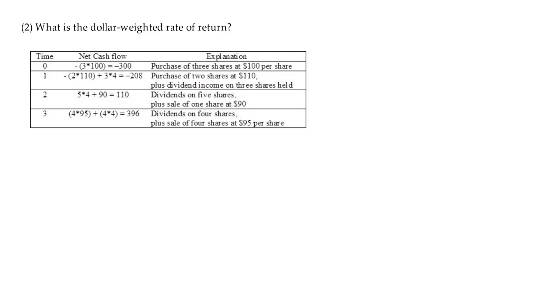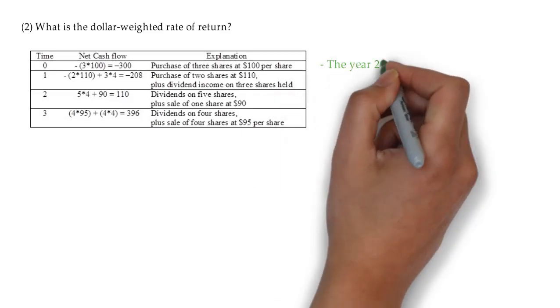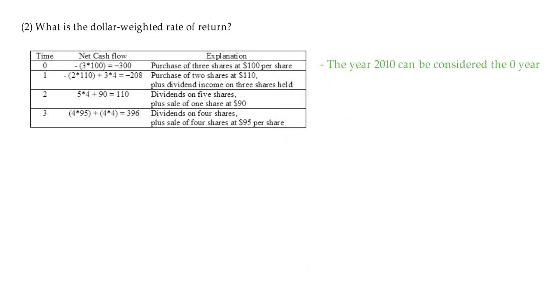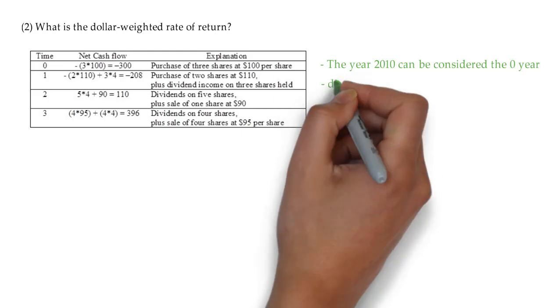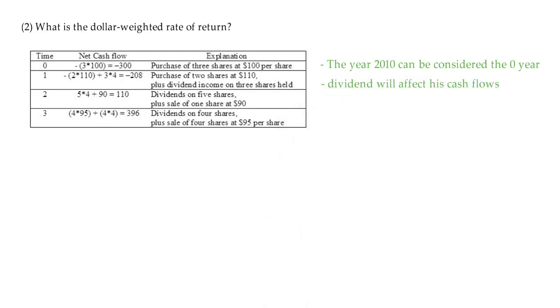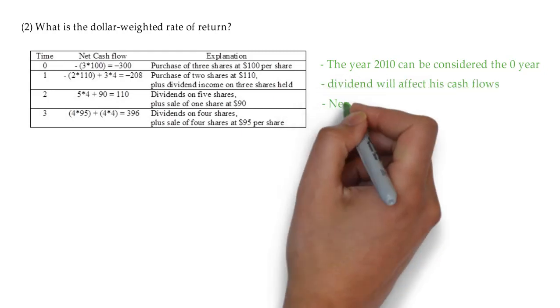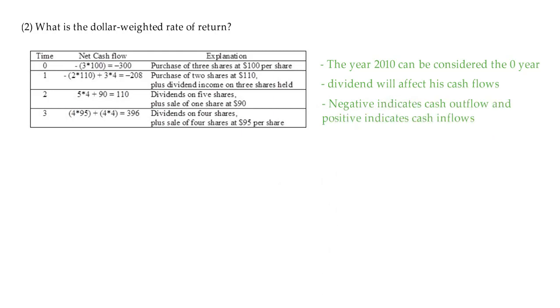Let's look at the cash flows in the table below. In year 2010, the investor bought three shares at $100 each and this year can be considered year zero. Each year, the investor also received dividends, which will affect these cash flows. Negative indicates cash outflow and positive indicates cash inflows.